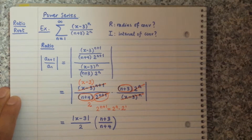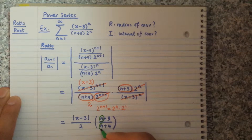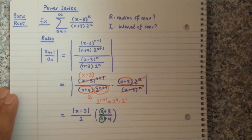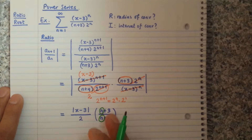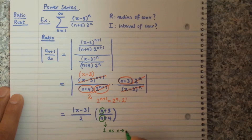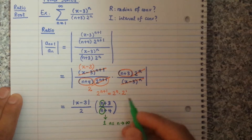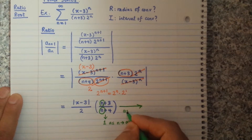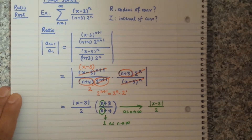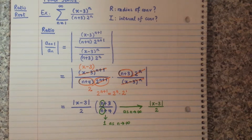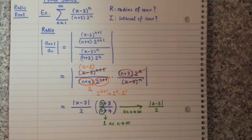Taking the limit as n goes to infinity: n+3 over n+4 has the same largest power of n in numerator and denominator. You can use L'Hôpital's rule or divide both top and bottom by n — either way the limit is 1. So the limit of the whole expression as n→∞ is just the absolute value of (x minus 3) over 2, since that part is constant in n.